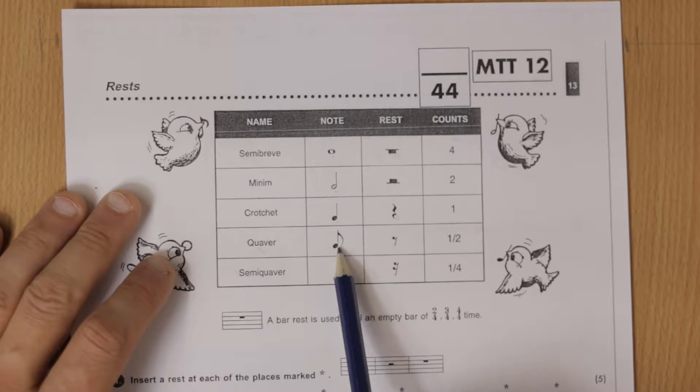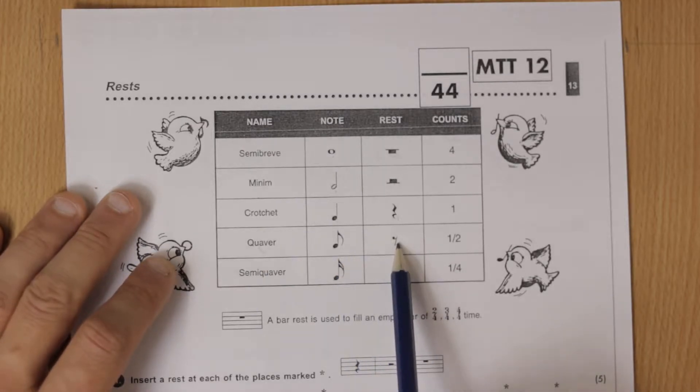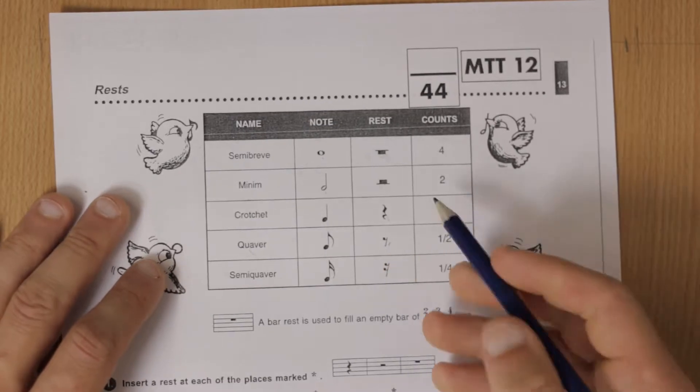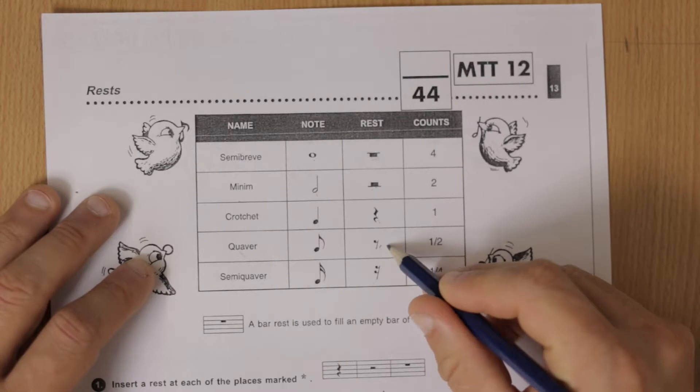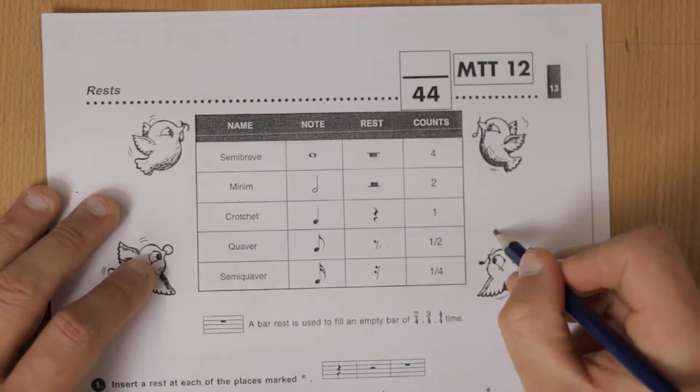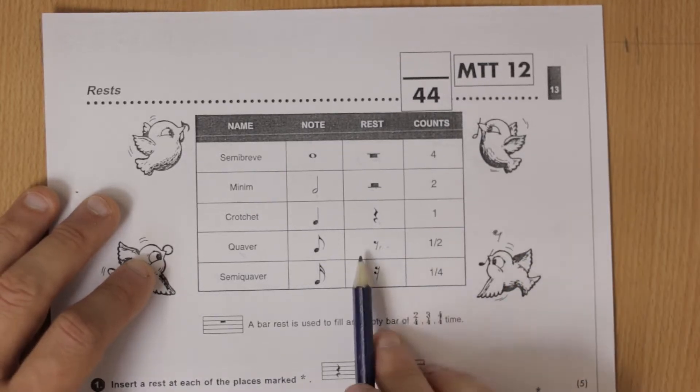A quaver looks like this and the rest looks like this. We haven't seen this before so this is a new one. A quaver rest. So I'll just draw that for you. It kind of looks like a seven but you do a kind of splodge and then you go around like that and come down and that's worth half a beat.